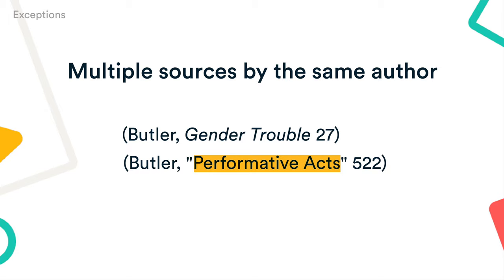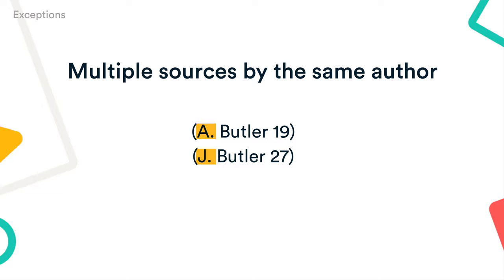To distinguish between different authors with the same last name, use the author's initials, or if the initials are the same, use full first names in your in-text citations.